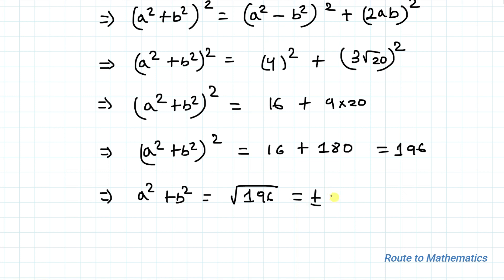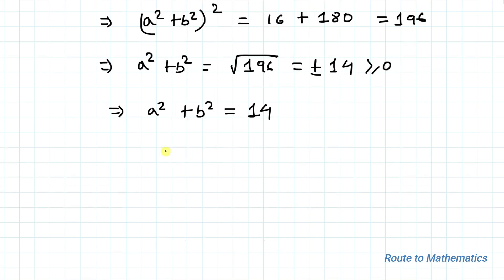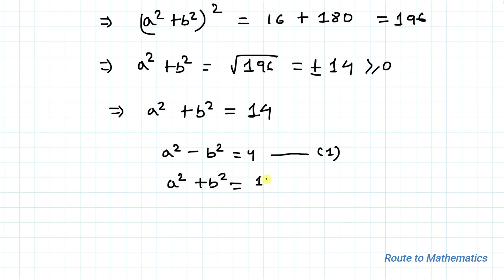A² + B² equals ±14. Since A and B are real numbers, the sum of their squares must be greater than or equal to zero, so A² + B² = 14. We already have A² - B² = 4 — call this equation 1 — and now A² + B² = 14, call this equation 2.